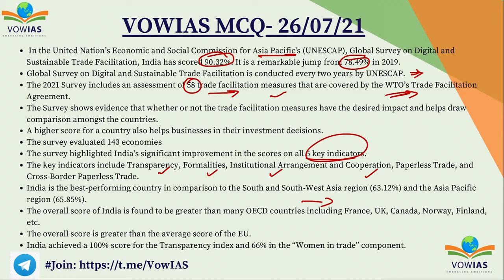India's score is greater than the average score of the EU. India achieved a 100% score for the transparency index and 66% in the women in trade component. In India, one of the major problems is that women are generally not included in business — opportunities for women are less. On a global average, women's participation in the workforce is approximately 36%, but in India it is around 20%.